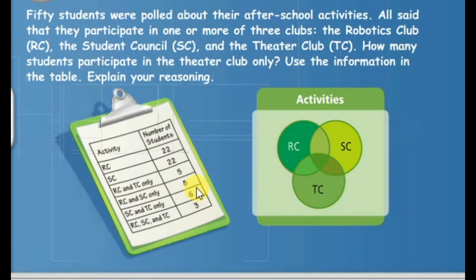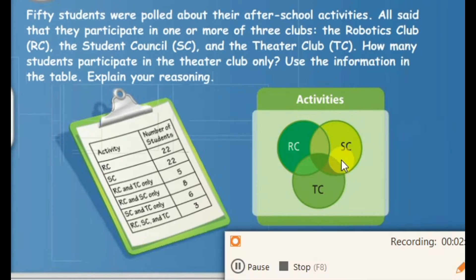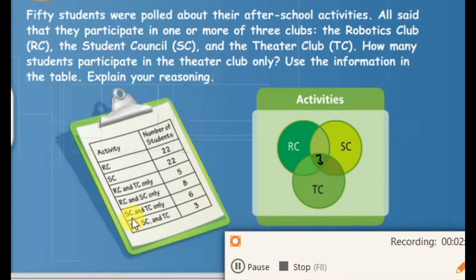Always remember that we only have 50 students. To know how many students are in the Theater Club only, let us put our information into a Venn diagram. We have the number of students for the three clubs. There is the intersection of all three sets — we will put the number 3 in that region. Also, the Student Council and Theater Club only has a value of 6 for their relationship.